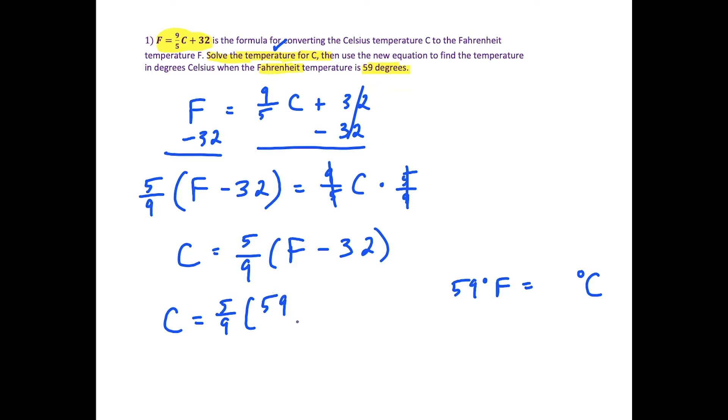This is 5/9 times (59 minus 32), which is 27. This simplifies nicely: 27 over 9 equals 3, and 5 times 3 equals 15. So 59 degrees Fahrenheit equals 15 degrees Celsius. This is our converted temperature using the formula we derived.